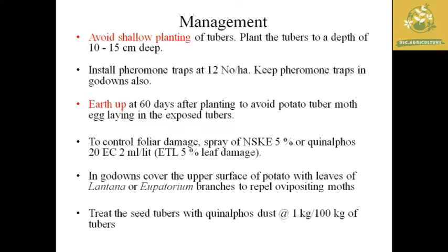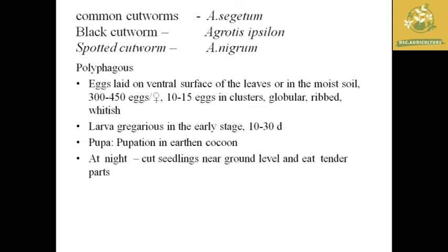Control foliar damage by spraying neem seed kernel extract at 5% or chemical spraying such as Quinalphos 20 EC at 2 ml per liter. Spraying should be done at the economic threshold level of 5% leaf damage. In godowns, place pheromone traps and spray lantana or Eupatorium branches on upper leaf surfaces to repel moths. Treatment with Quinalphos dust at 1 kg per 100 kg of tubers is effective against potato tuber moth.